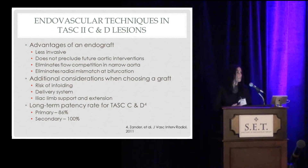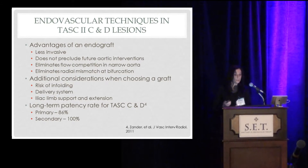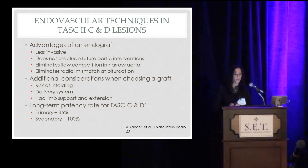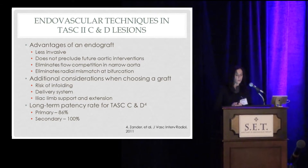Some of the advantages of using an endograft in this case is that it allows you to remain less invasive than an aorto-bifemoral bypass. In her case especially, it really does not preclude a future aortic intervention should she have difficulty, because we still have a segment of untreated infrarenal aorta. It really eliminates the flow competition in the distal narrowed aorta with her eccentric stenosis. Trying to fit two ICAST stents in there without competitive flow would have been very difficult and potentially led to short-term re-stenosis. It also basically eliminates the radial mismatch at the bifurcation.